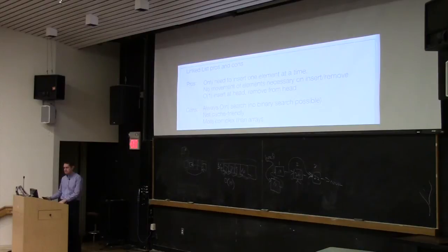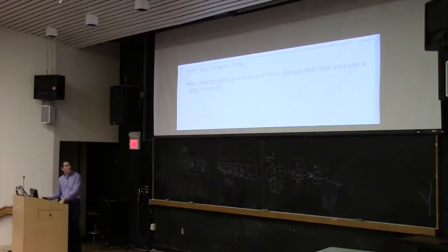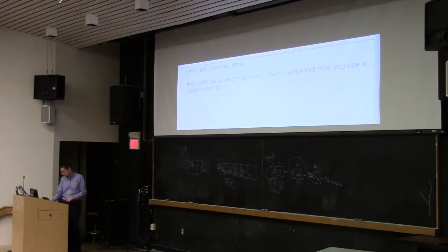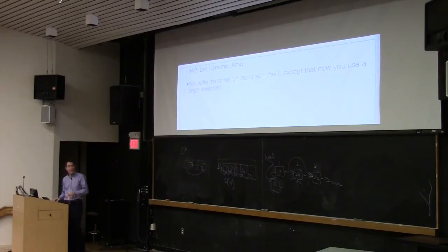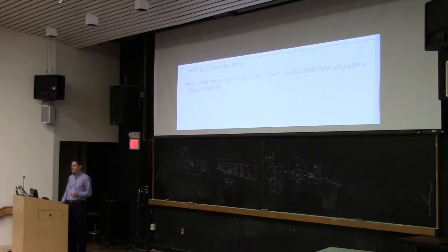Homework two is a singly linked list. If you're having trouble with it, you've still got a couple days — go to office hours and they'll help you debug. Any last-minute questions on linked lists or asymptotic behavior?